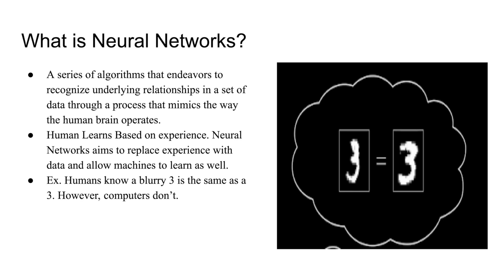So to start, what is neural networks? Neural networks is basically a series of algorithms that endeavors to recognize underlying relationships in a set of data. People came up with the idea of neural networks because they wanted to mimic the brain. In the brain, there are thousands or even millions of neurons firing in order for us to make educated decisions.